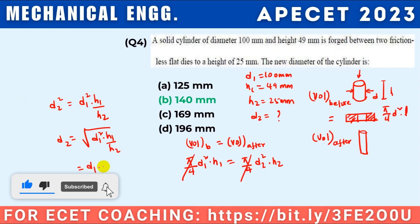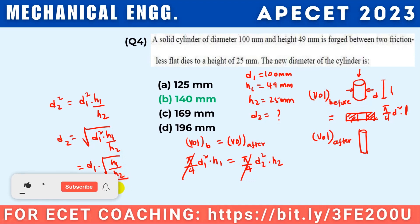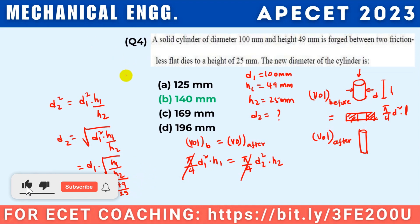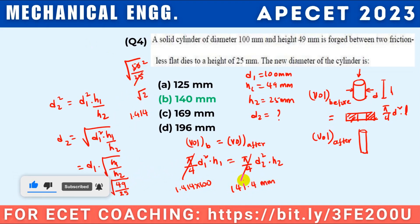d2 = d1·√(h1/h2). Given d1 = 100mm, h1 = 49mm, h2 = 25mm: d2 = 100·√(49/25) = 100·√(1.96) = 100·1.4 = 140mm. So the answer is approximately 140.4mm.